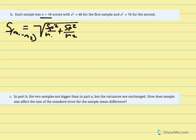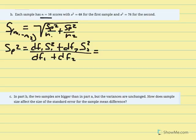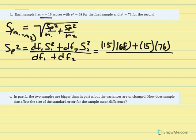Using the same alternate pooled variance equation: degrees of freedom 1 times variance 1, added to degrees of freedom 2 times variance 2, over degrees of freedom 1 plus degrees of freedom 2. With n equal to 16, degrees of freedom equals 15. So: 15 times 68 added to 15 times 76, over 15 plus 15.